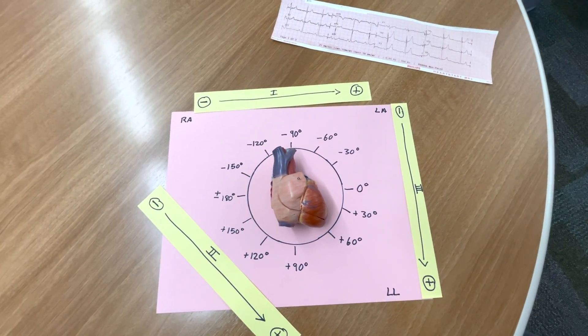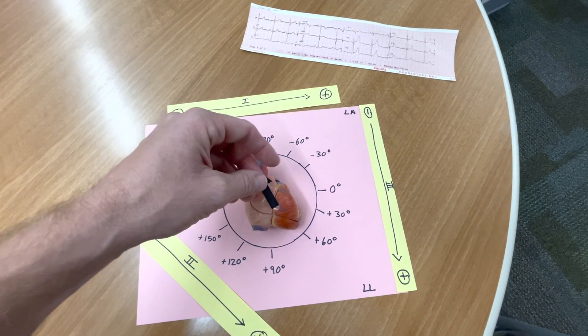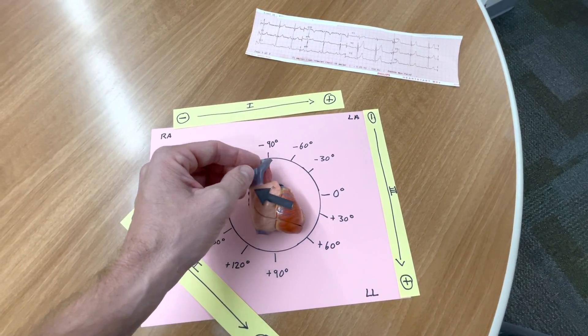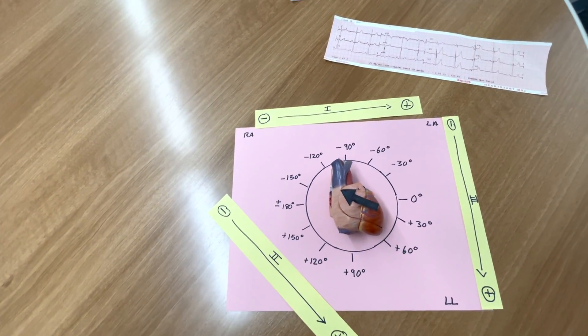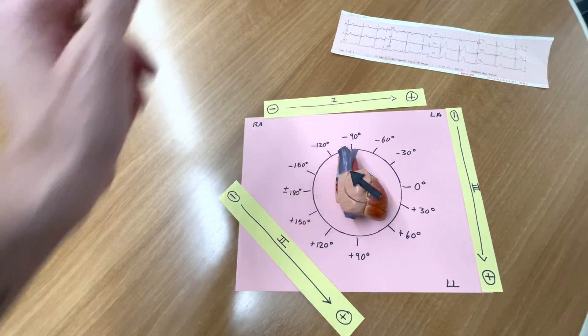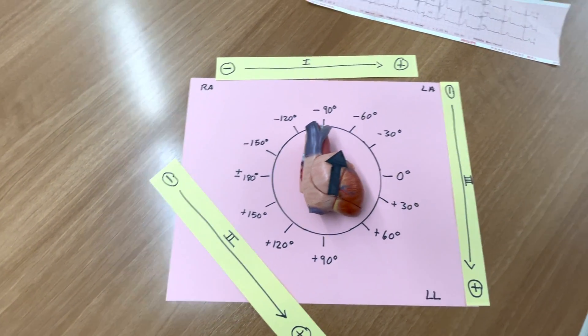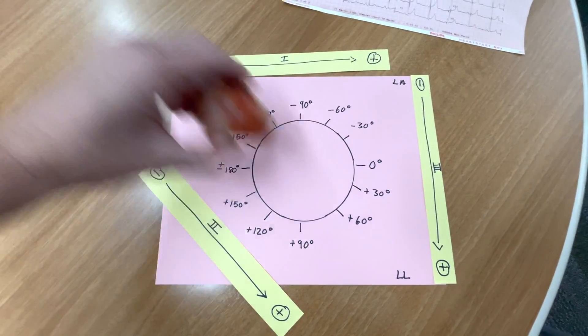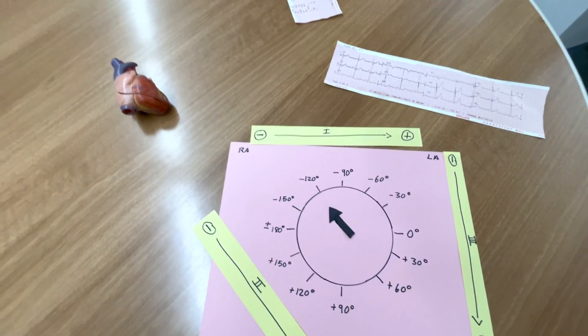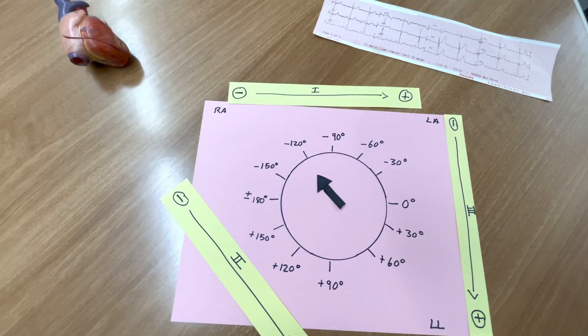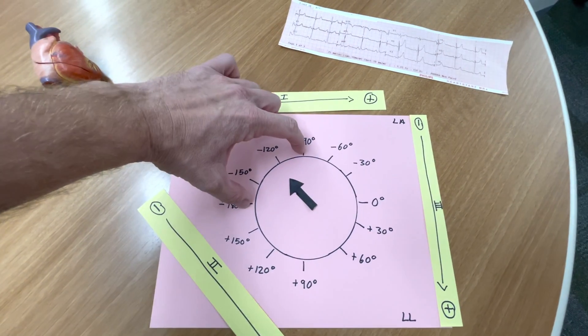And then the last major type of axis deviation is something called right shoulder deviation, or some people refer to this as, quote-unquote, no man's land, where the axis is so far right that it's essentially moving completely retrograde to how the mean vector of electrical activity in the heart would move. Let me just move my little heart here and put an arrow in there. So, it would be in this range here. Your right shoulder or extreme right shoulder axis deviation is going to be anywhere from negative 90 to 180 degrees, in this range here.